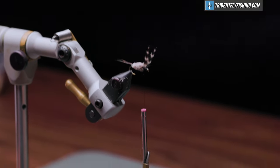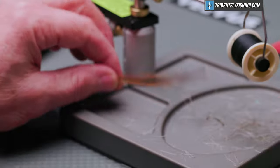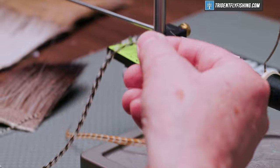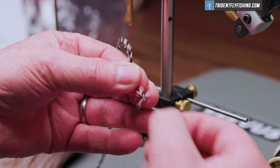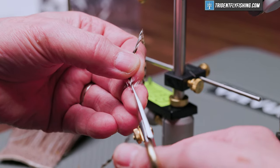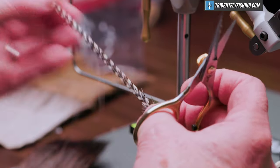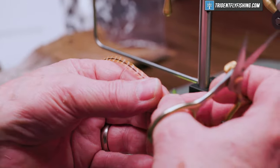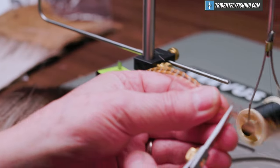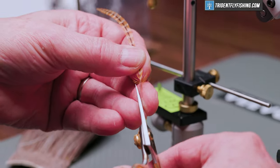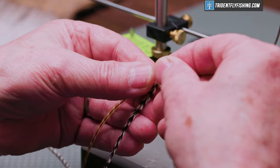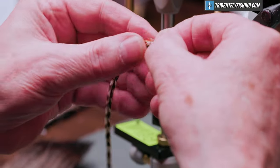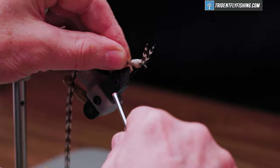Next, we're going to tie in our hackles. There will be two. One is a grizzly hackle I've taken from a saddle and we'll prepare that like we always do - we'll pull the barbules out away from the stem and cut those off like that. And the other is from a dark barred ginger. Brown is also traditional. And we'll tie these in right behind the wing. I'm going to tie them in together with their shiny side out and wrap them forward separately.